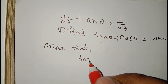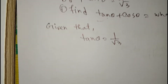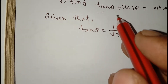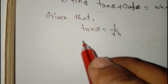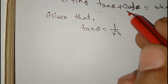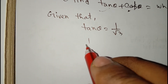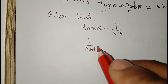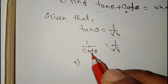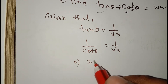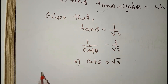Given that tan theta is equal to 1 by root 3. As we know, tan theta is the opposite of cot theta. So 1 by cot theta equals tan theta. Therefore cot theta equals root 3.